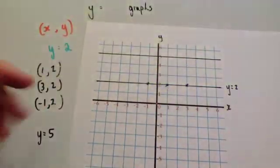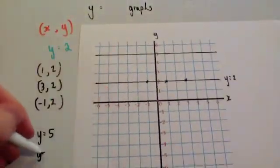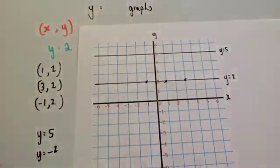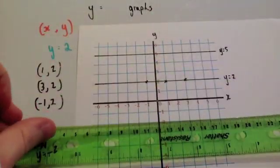And another one could be something like this. Y equals minus 2. And again, that would be a horizontal line that goes through minus 2 in the y-axis, like this.